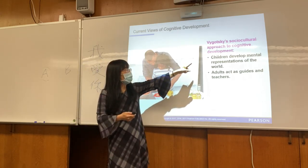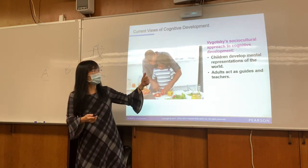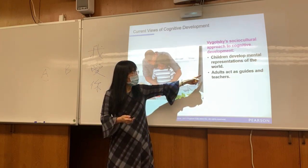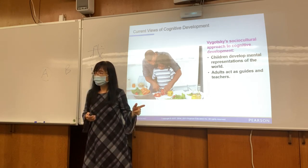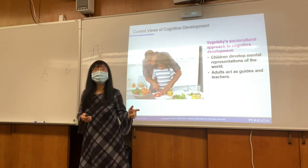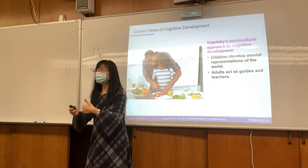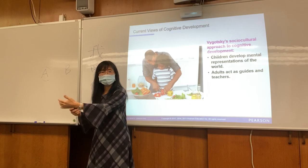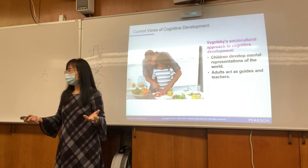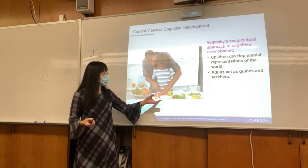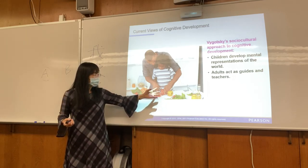Vygotsky emphasized that adult guidance is key to cognitive development. The example of a father teaching a child how to cut a tomato illustrates this scaffolding. By the way — is a tomato a fruit or a vegetable? In the cafeteria, small tomatoes might be classified as fruit and big ones as vegetable. The key point is that Vygotsky, who was from Russia and died very young at around age thirty, showed how important parents are as educators at home.